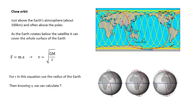We derived that v = √(GM/r) for any circular orbit. If you put r equal to the radius of the Earth in that equation, you can work out both the orbital velocity and the period of a close orbit — I suggest you try that.